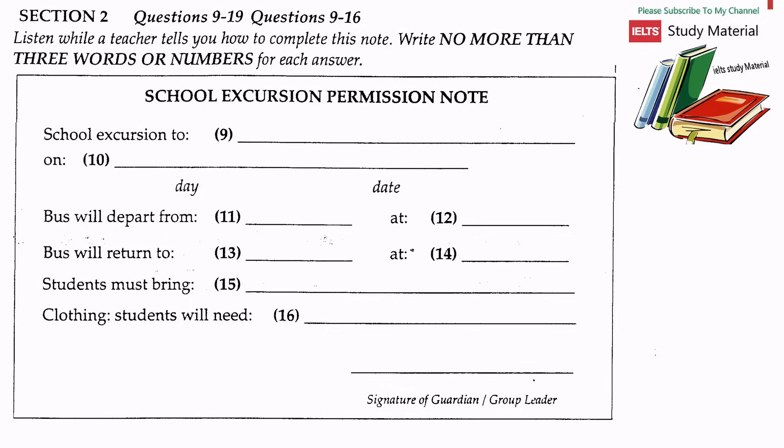Good morning students. My name is Mrs Brown and I'm in charge of the school excursion next week. Please take out your school excursion permission note so you can fill it in. For insurance purposes this note must be signed by your guardian or the group leader. First of all, fill in the name of your class — everyone here is in 3A, so write 3A where it says class. We're going to the Blue Mountains, so this is a school excursion to the Blue Mountains. The day we leave is Monday, that's Monday June 10.